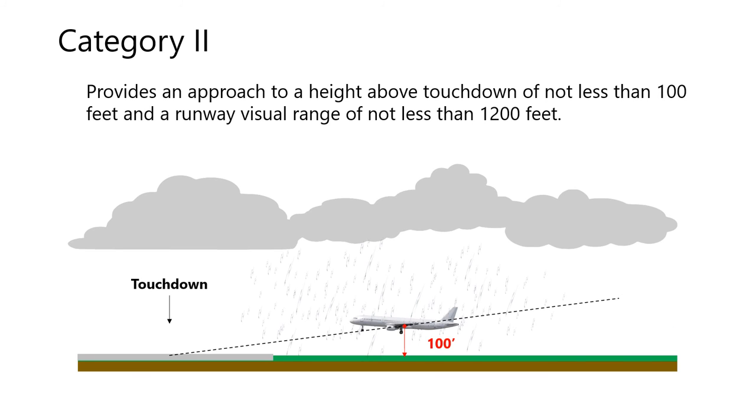Category 2 provides an approach to a height above touchdown of not less than 100 feet and a runway visual range of not less than 1,200 feet.